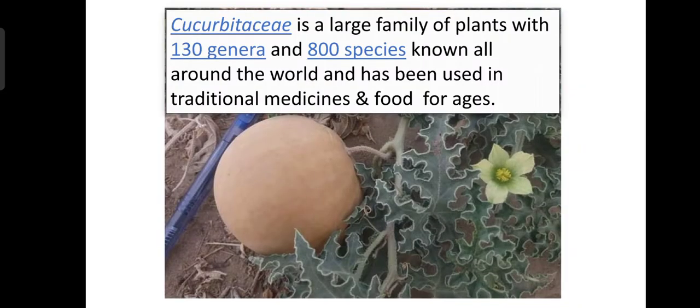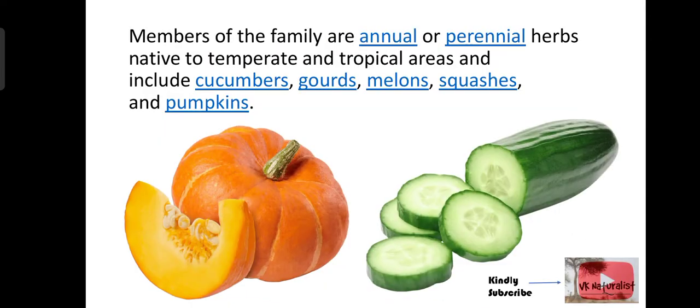Introduction: Cucurbitaceae contains about 130 genera and 800 species which are distributed all over the world. The plants of Cucurbitaceae are used in traditional medicines and as a food from prehistoric time periods. Plants of the family are either annual or perennial herbs like cucumber, bitter gourd, pumpkins, melons, etc.